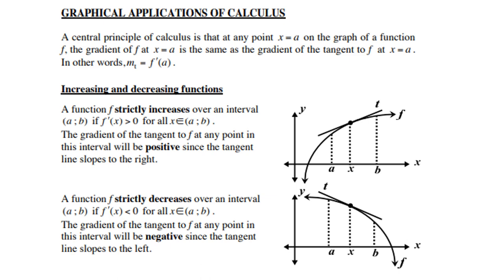Let's look at increasing and decreasing functions. A function strictly increases over an interval (a, b) if f'(x) > 0 for all x in (a, b). The gradient of the tangent to f at any point in this interval will be positive, since the tangent line slopes to the right.